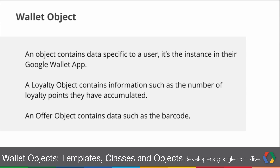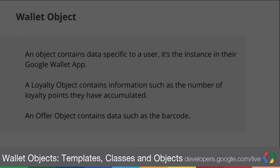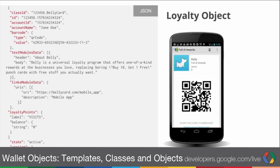For offers, if you have a personalized offer, it could be unique information such as the barcode itself. Object information is also represented as a JSON object. In this example, we're defining the user-specific data for a Belly card — fields such as the account ID, the user name, barcodes, points, and some other fields. On the right is an example of the expanded view where we've taken the class data and the object data, merged them together, and used a template to render it in the wallet app.